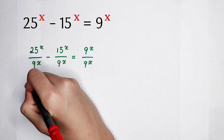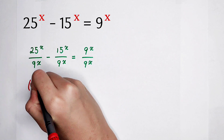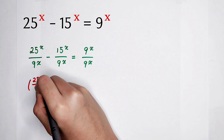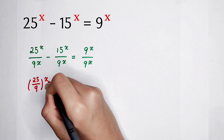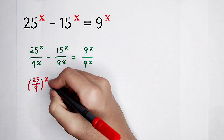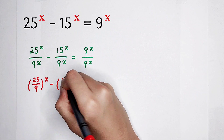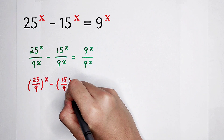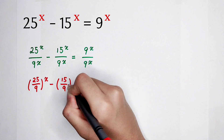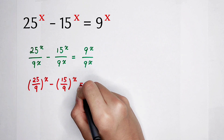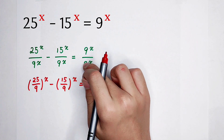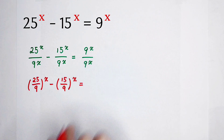Now we have to do some simplification. It's 25 divided by 9, all to the power of x. Take this x out. Minus this fraction. 9 to the power of x divided by 9 to the power of x — the numerator and the denominator are the same, so it's 1.